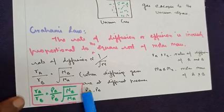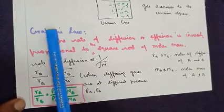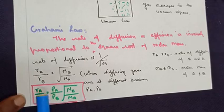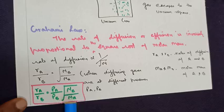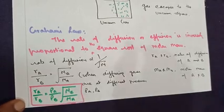So, including pressure, the appropriate law of Graham's is: Ra by Rb equals Pa by Pb times square root of Mb by Ma.